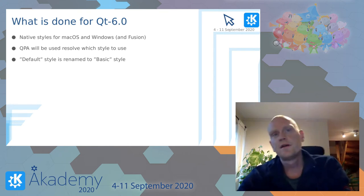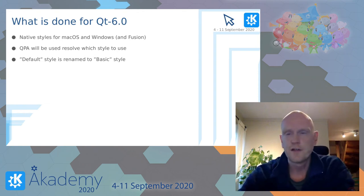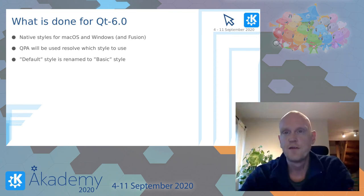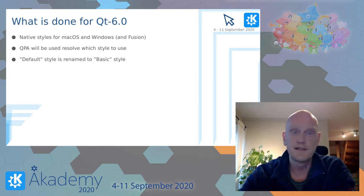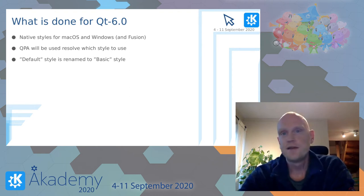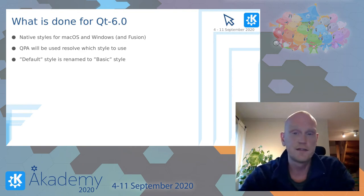Work has also been done for Qt 6 to let us resolve more of the styling dependencies during compile time. For every style, you now have the option to specify the fallback style when the style is built. Mac OS style, for example, has the Fusion style set as fallback. And the Fusion style has the basic style as fallback. This way, every style has a dependency chain that is known already at compile time, which basically means less lookup of style assets during runtime.